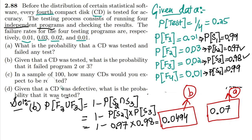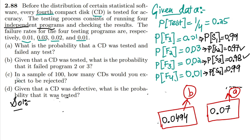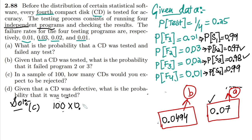Now for part C: in a sample of 100 CDs, how many would you expect to be rejected? A CD is rejected if it fails any one of the four tests. The probability of failing any test is 0.07, and the total number of samples is 100. Multiplying them: 100 × 0.07 = 7. So out of 100 CDs, we would expect 7 to be rejected.